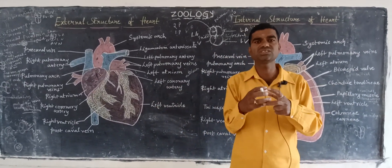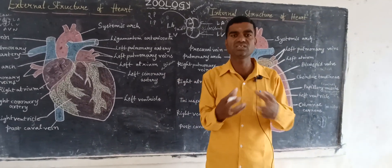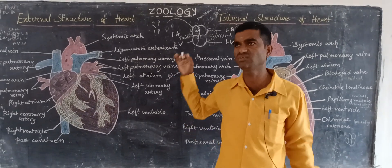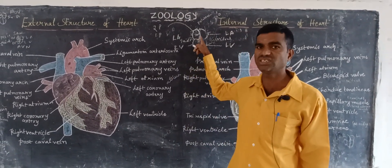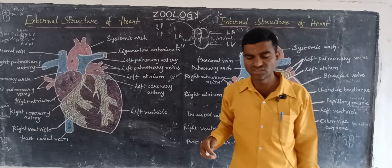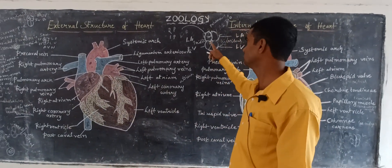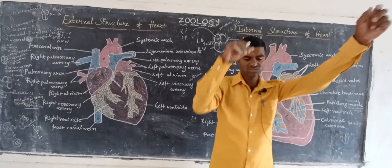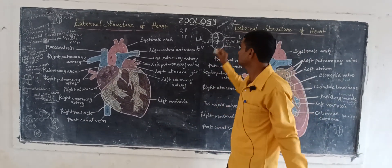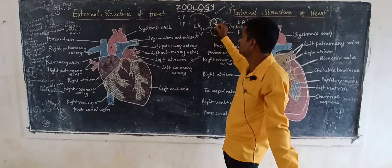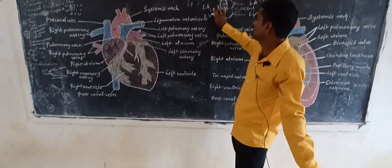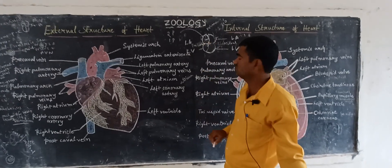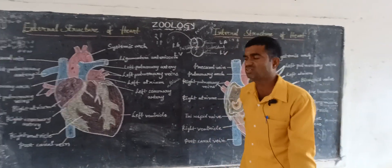Atrial systolic pressure, ventricular systolic pressure, and cardiac diastolic pressure — these all pressures occur with the help of the atria and ventricles. The cardiac cycle is computed within 0.1 seconds, 0.3 seconds, and 0.4 seconds. From the SAN node pacemaker, the AVN node — atrioventricular node — is also formed.